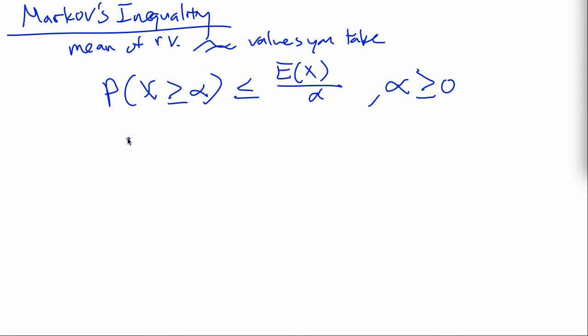So, remember the definition of expectation. Your expectation is the sum of all values it takes, the value it takes times the probability that x takes that value. Now, we're only interested in this alpha that will be big. So, let's just chop off some values of this sum. So, we can chop off the values to get the sum of all the a that's greater than or equal to alpha of a times probability of x equals a. Okay.